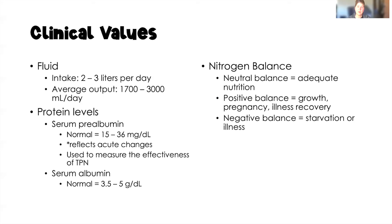Nitrogen balance is also important. When we eat proteins, they contain nitrogen. A neutral balance of nitrogen means we have adequate nutrition. A positive nitrogen balance is often seen during recovery from illness, pregnancy, and growth — so school-aged children and adolescents all have a positive nitrogen balance due to their growth. Negative nitrogen balance is most of what we deal with as nurses in adults, and we see it during illness, malnutrition, and starvation.